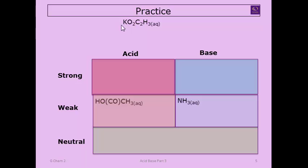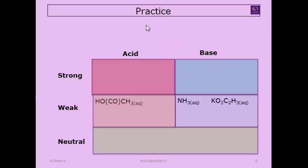Now break potassium acetate into two parts: the potassium ion alone is neutral; the acetate ion is the conjugate base of a weak acid — acetic acid — which makes it a weak base. So together, this is a weakly basic salt. Potassium contributes nothing to the pH.